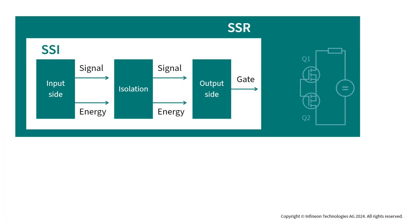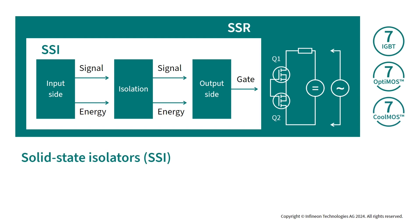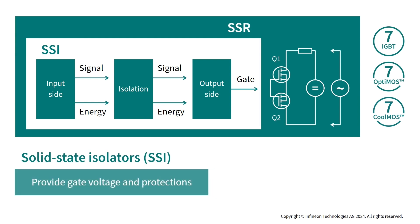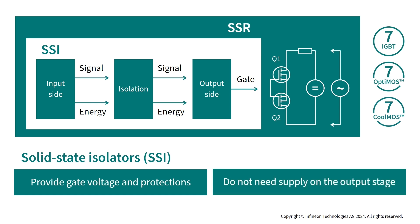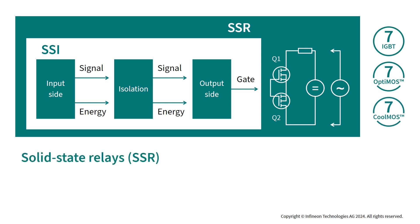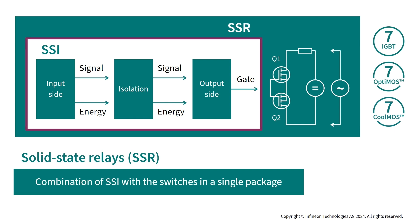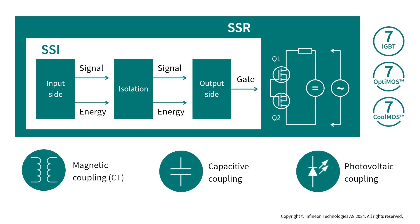Solid state isolators, or SSIs, are similar to gate drivers, but besides providing gate voltage and protections, they do not need a supply on the output stage as they internally transfer energy and signal from input to output across the isolation barrier. Solid state relays, or SSRs, are a combination of the isolator SSI together with switches in a single package. Commercialized technologies can be magnetic by coreless transformer, capacitive, and photovoltaic. Infineon devices use a magnetic coupling solution.